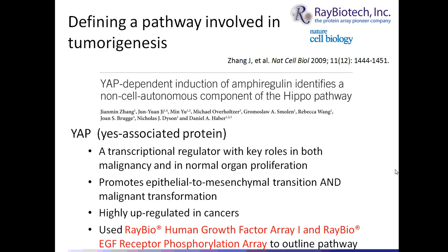The first paper I'm going to present is from Daniel Haber's research lab at Harvard Medical School. Daniel's favorite transcription factor is known as Yes-Associated Protein, or YAP. YAP is a transcriptional regulator that plays roles both in normal organ proliferation as well as the epithelial-to-mesenchymal transition in embryonic development, but it's also known to be highly upregulated in cancers and plays an essential role in malignancy or transformation.